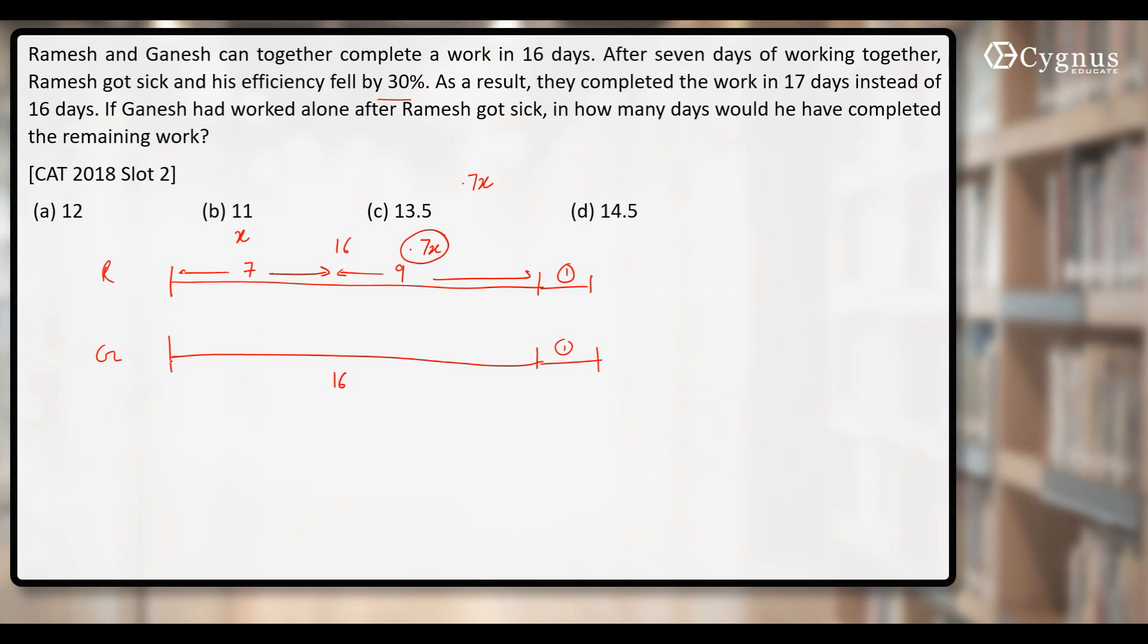On the same side, Ganesh was working at his full efficiency. There's a lack of how much? 0.3X, because of Ramesh. He did not work at his full efficiency. This will fall short by 0.3X per day.